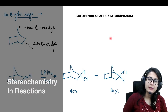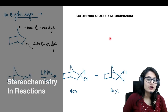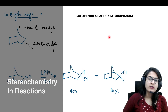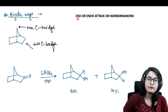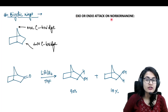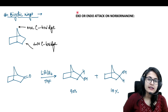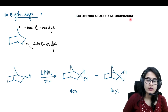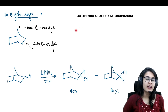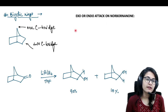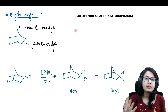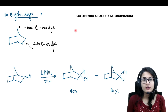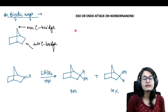Hello everyone, welcome to Rasayan Academy. In this video we are going to talk about some really important factors for predicting the structure of the product — that is the exo or the endo attack on the norbornone system. We are having cyclic compounds, bicyclic rings, and how they are going to react with different reagents.